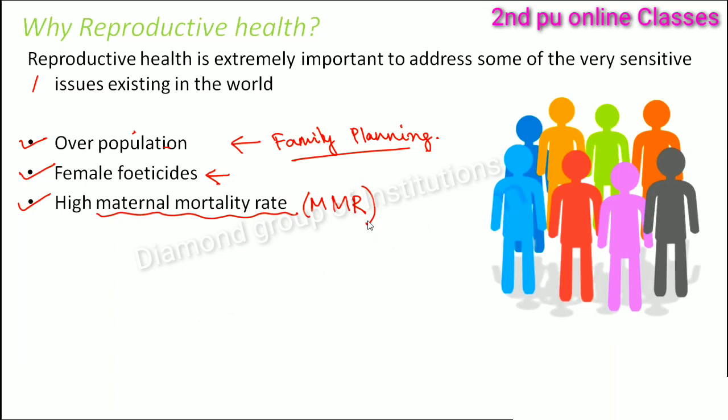In order to control that also, reproductive health helps. It talks about the care needed for the pregnant mother, the medical facilities that need to be provided to a pregnant female, and how to take care of a newly born child.